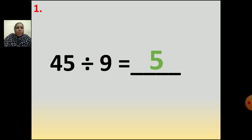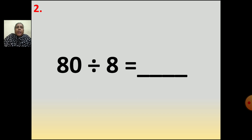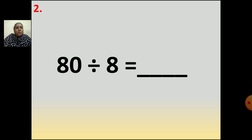45 divided by 9 is equal to 5. Now the second question: 80 divided by 8. Here you have to say the table of 8. In the table of 8, when you get 80 — 8 ones are 8, 8 twos are 16, 8 threes are 24, 8 fours are 32, 8 fives are 40, 8 sixes are 48, 8 sevens are 56, 8 eights are 64, 8 nines are 72, and 8 tens are how much? 80.